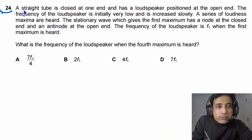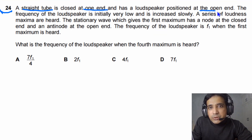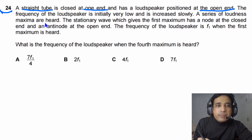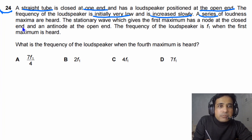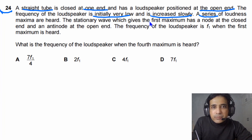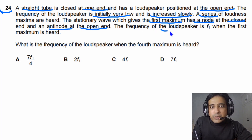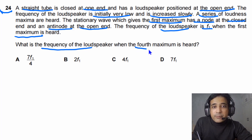For question number 24, it is given that a straight tube is closed at one end and has a loudspeaker positioned at the open end — so this is simply a one-end-open, one-end-closed pipe. The frequency of the loudspeaker is initially very low and is increased slowly, and a series of loudness maxima are heard. The stationary wave giving the first maximum has a node at the closed end and an antinode at the open end. The frequency of the loudspeaker is f1 when the first maximum is heard. What is the frequency when the 4th maximum is heard?